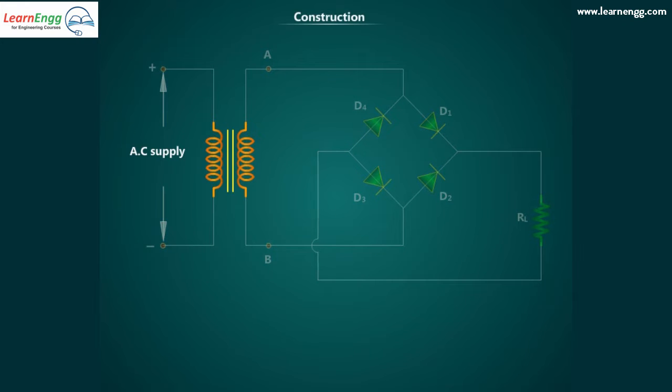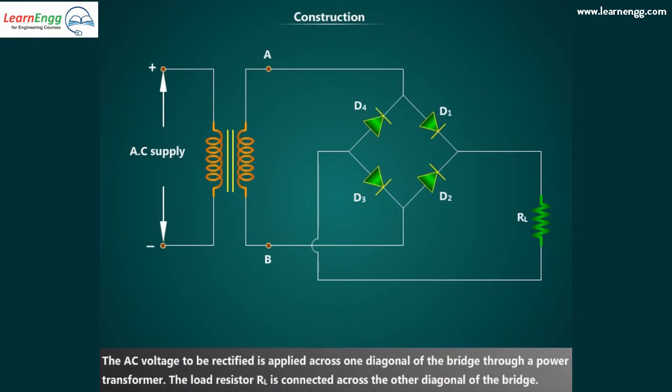Bridge Rectifier consists of a transformer, four semiconductor diodes and a load resistor RL. The AC voltage to be rectified is applied across one diagonal of the bridge through a power transformer. The load resistor RL is connected across the other diagonal of the bridge.